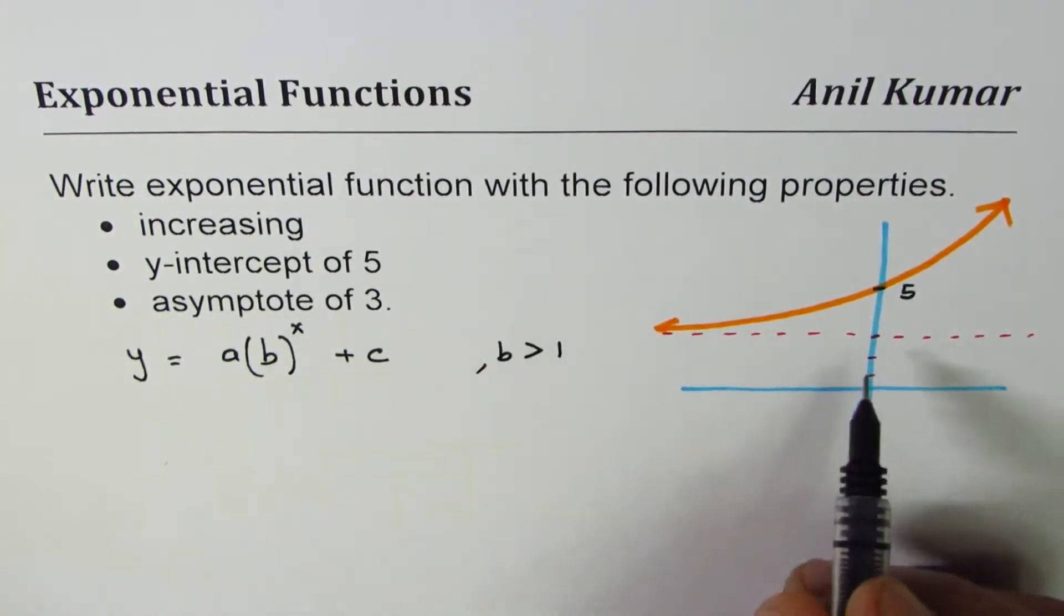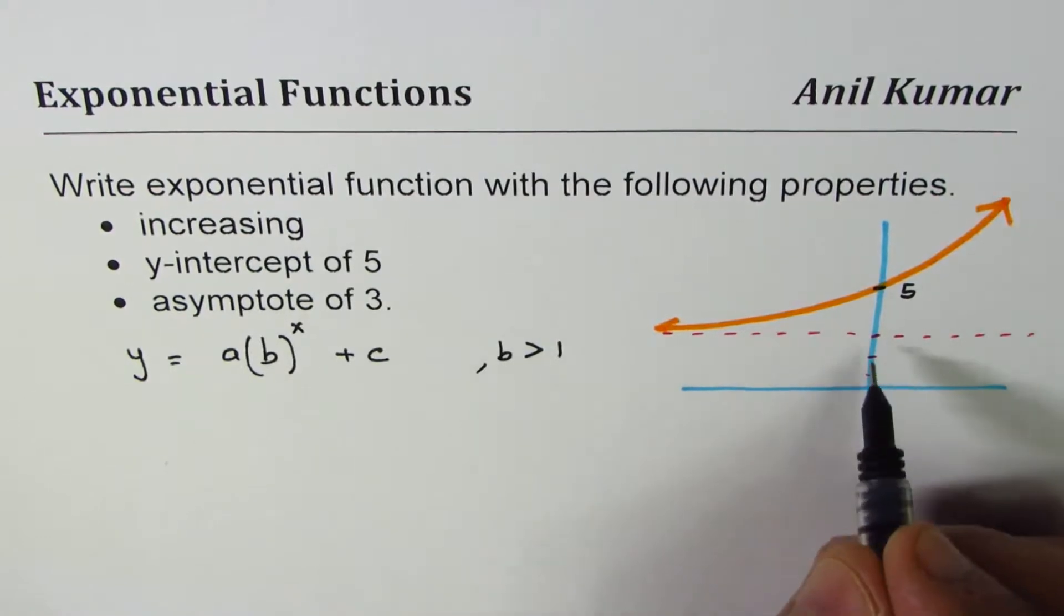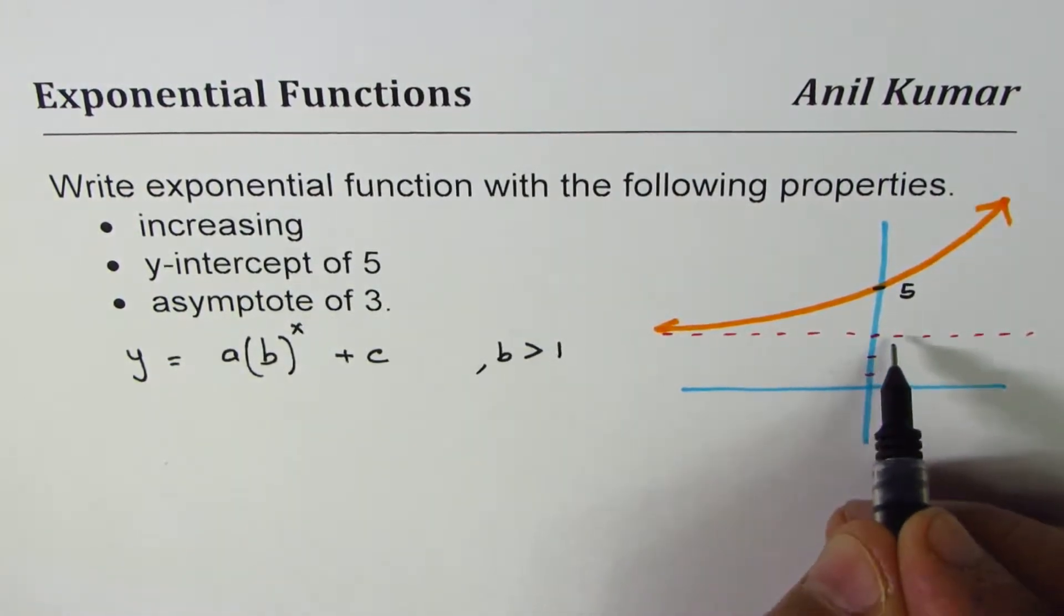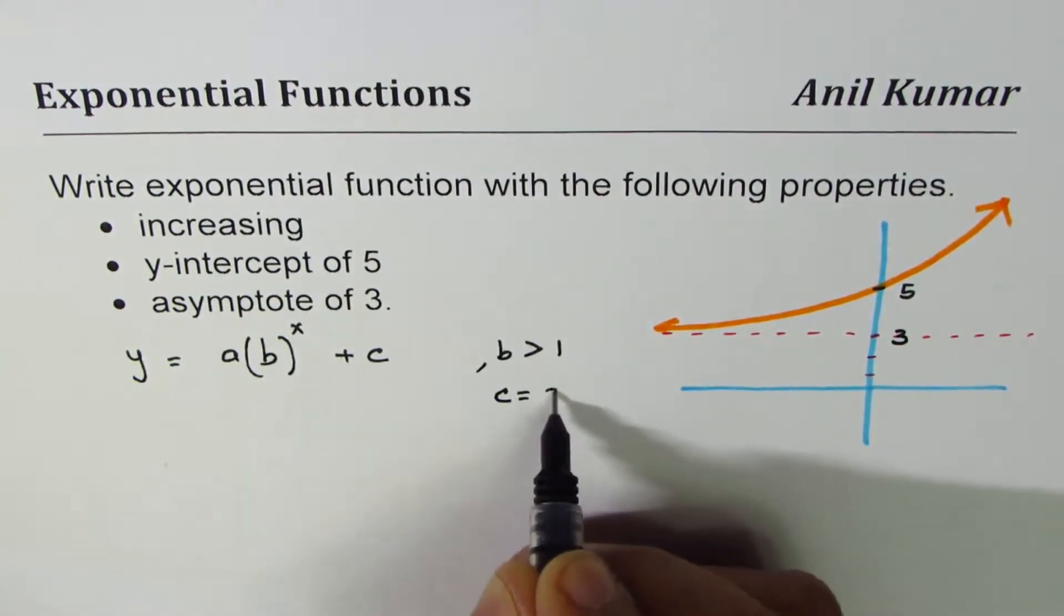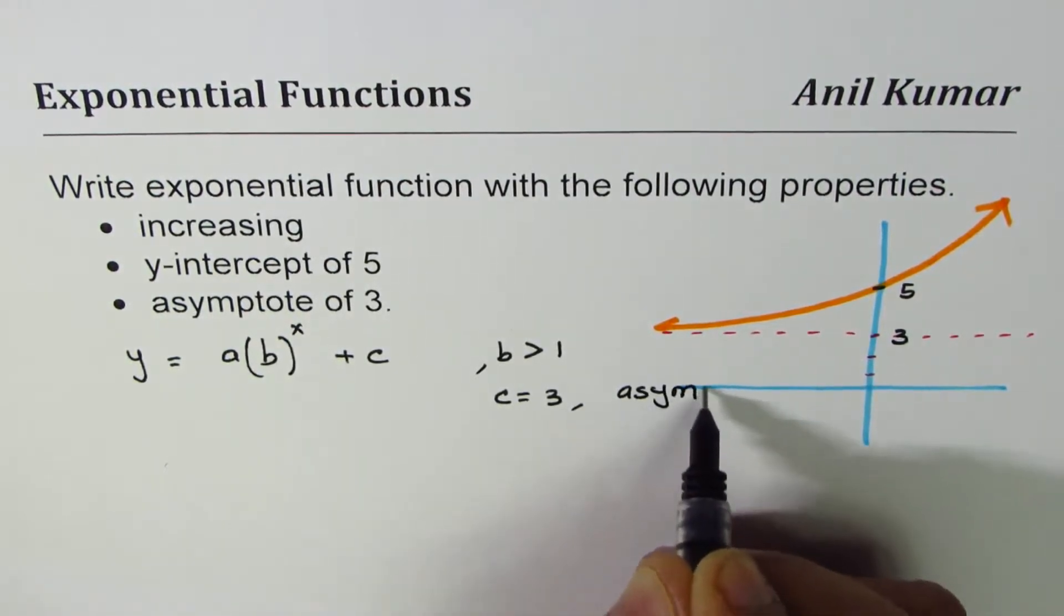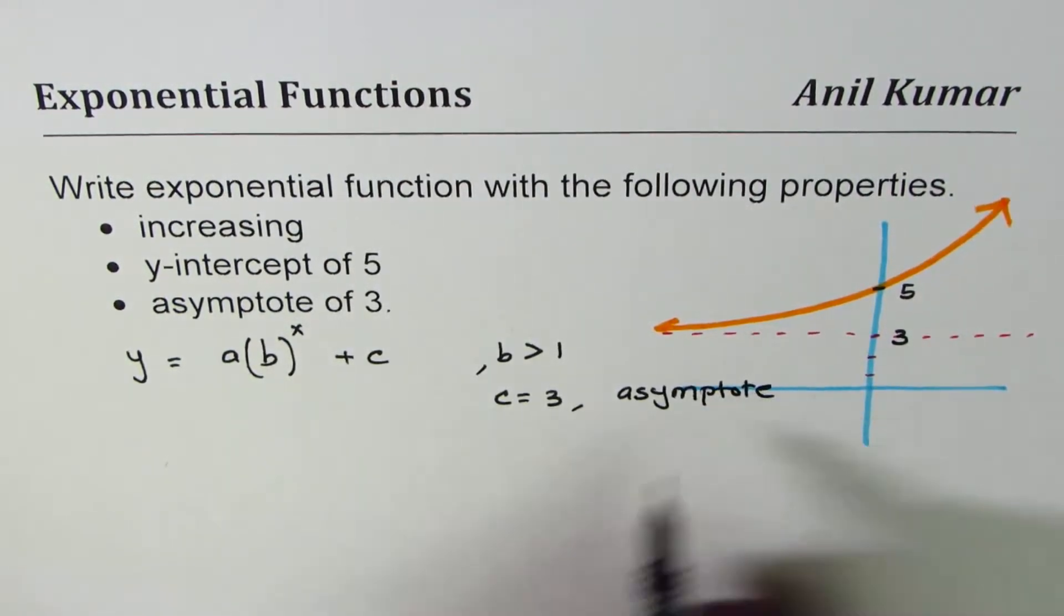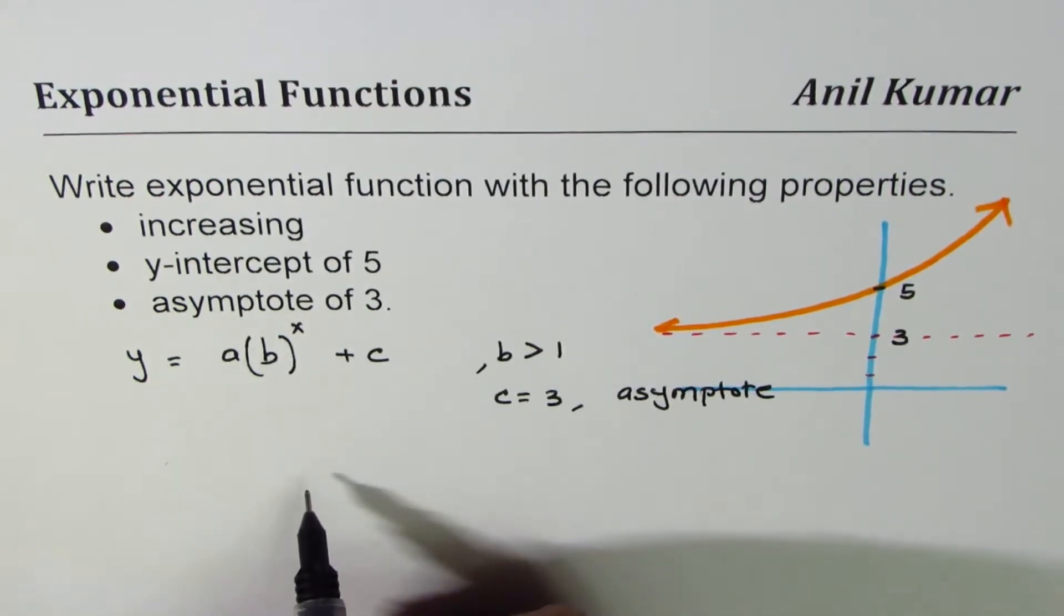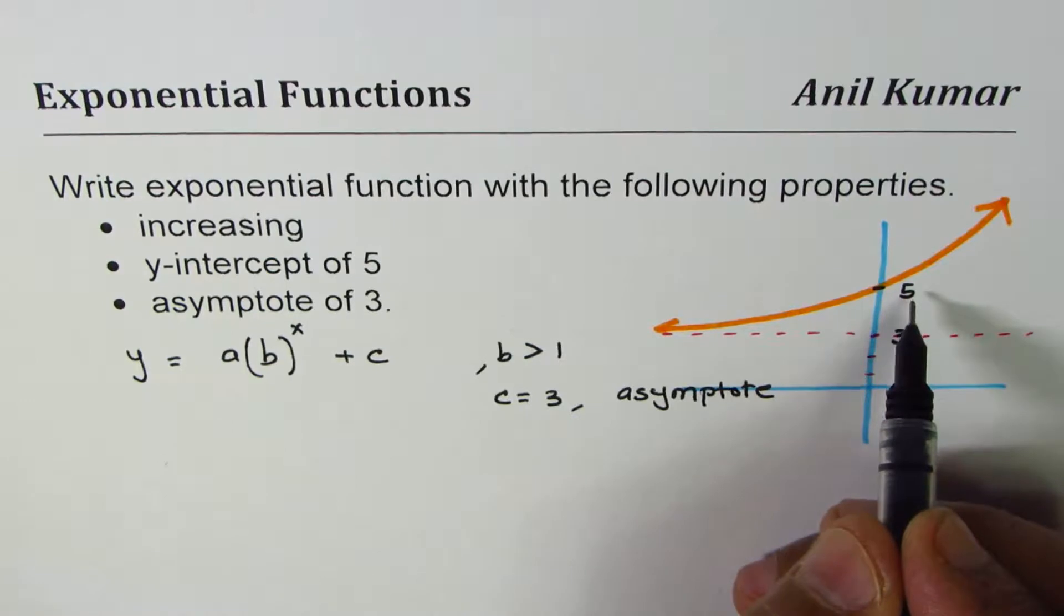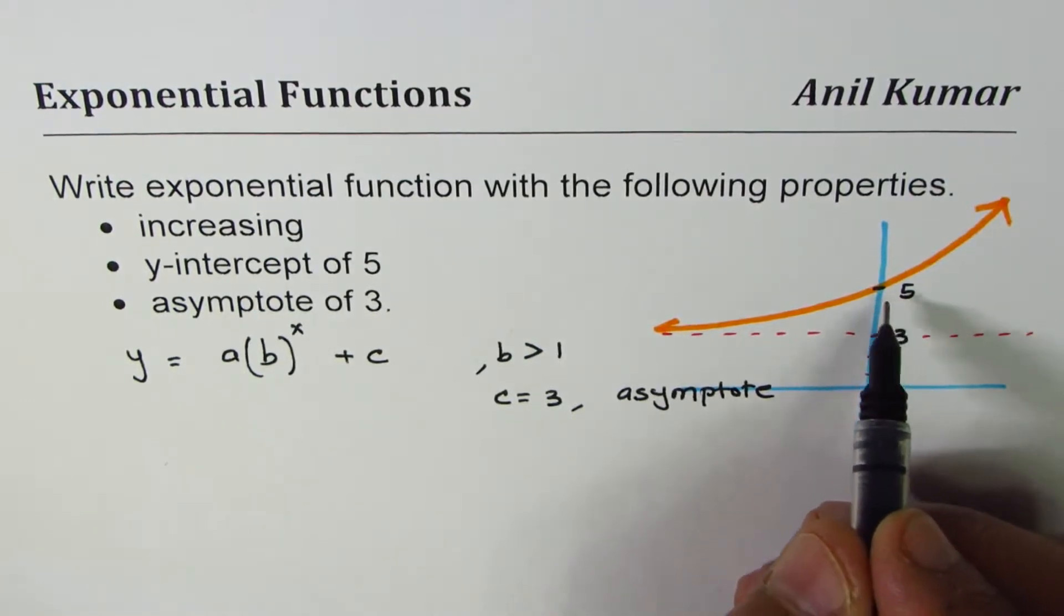Now the value of c is basically the horizontal asymptote. So from here, since horizontal asymptote is 3, we know c equals 3. That is from the asymptote, so c is the asymptote.